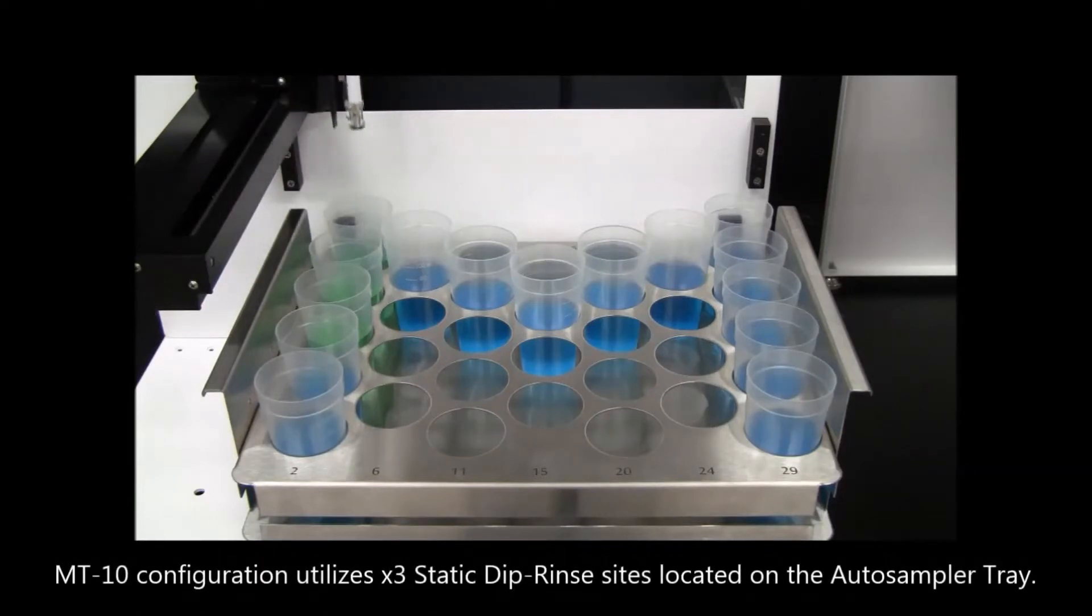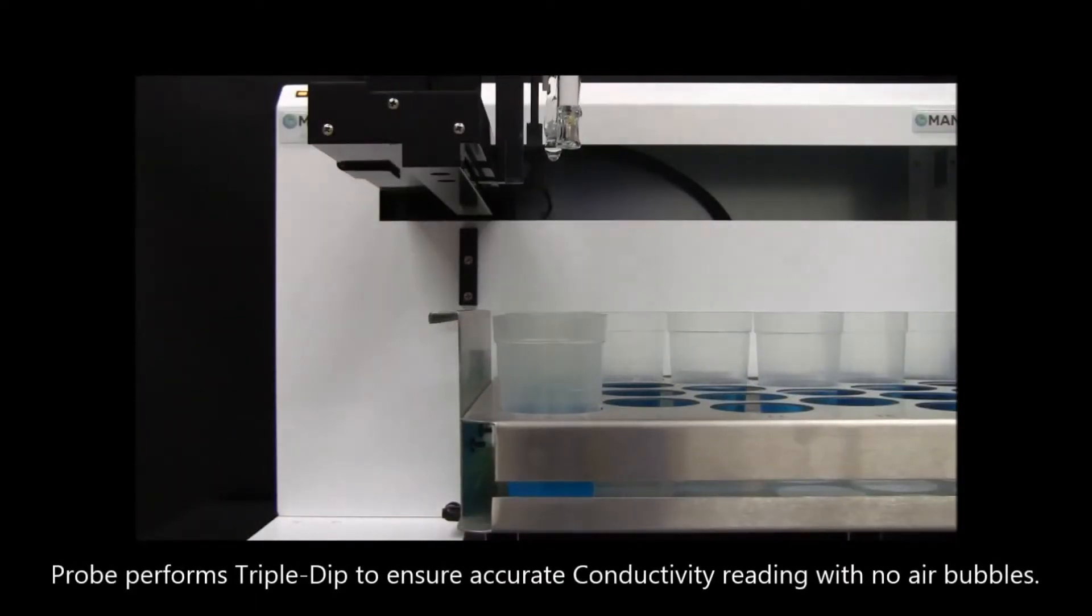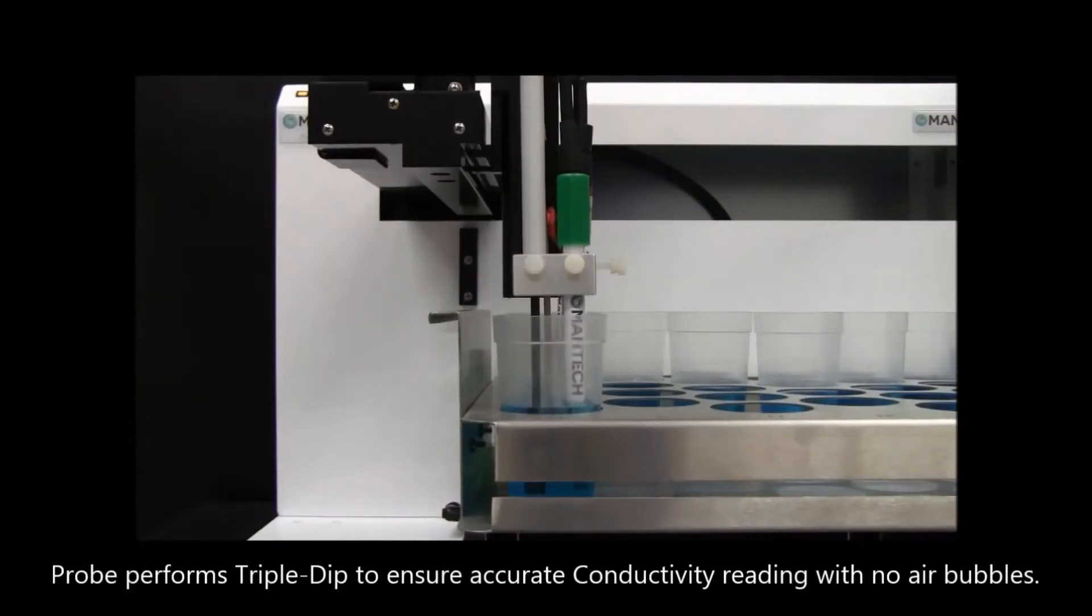The MT-10 configuration utilizes three static dip rinse sites located in the sampler tray. The probe then performs a triple dip to ensure an accurate conductivity reading with no air bubbles.